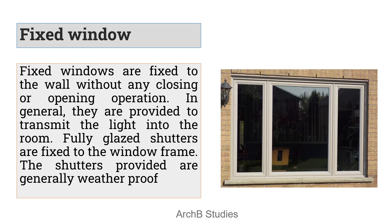The first type is the fixed window. This window is fixed in the wall — we can't open or close it. Generally, these are provided just to admit light inside the room. That is the primary function in most cases. Since we can't close or open it, it has to be long-lasting and weatherproof, so that after five years it should not corrode, otherwise we will have to replace them, which might be costly.